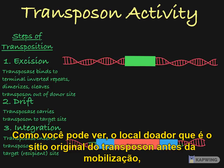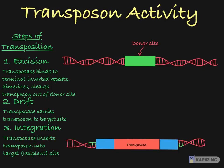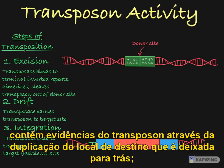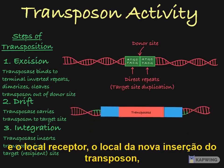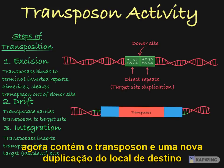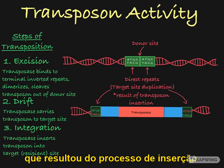As you can see, the donor site — that is, the original site of the transposon before mobilization — contains evidence of the transposon through the target site duplication that is left behind. And the recipient site, the site of novel insertion of the transposon, now contains the transposon and a new target site duplication that resulted from the insertion process.